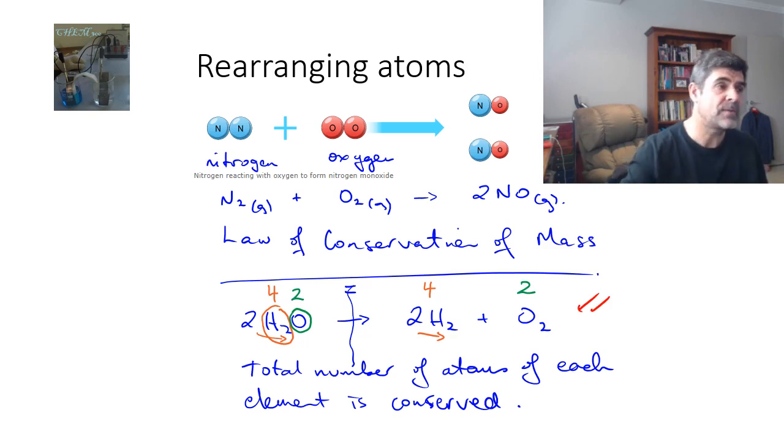This is the reason why it's very important for you to balance your equations, so that you show that you've got the total number of atoms the same on the reactant side as you do on the product side. The key, of course, is in a chemical reaction, the atoms are rearranged. They're not created or destroyed.